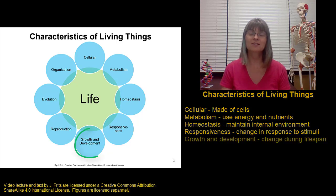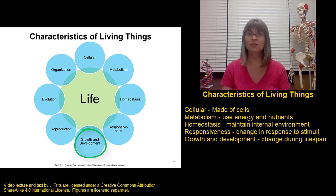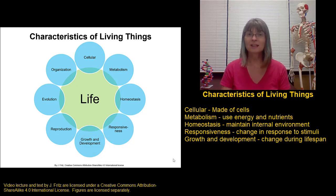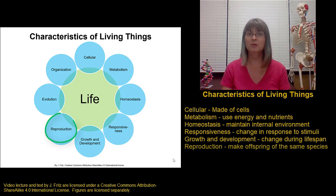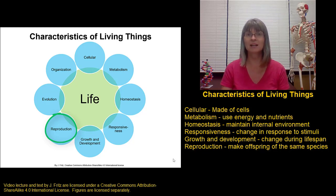The next characteristic of living things is growth and development. Living things grow and they develop, meaning they change over their lifespan. I'm not exactly the same now as I was when I was born because I developed and grew over my lifespan. Ultimately, for most living things, the process of growth and development leads to the ability to reproduce. Reproduction is an important characteristic of all living things — it allows living things to make more of their own kind. Humans reproduce to make more humans.